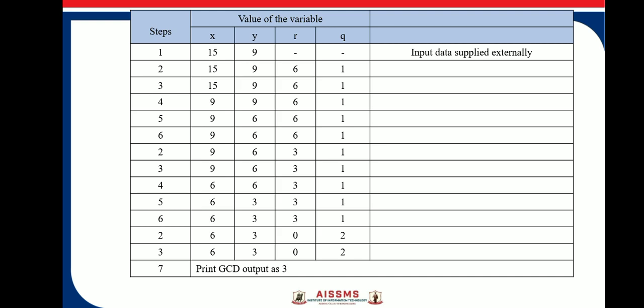If it is 0, go to step 7. Else, go to step 4. Now here, in step 3 again, 9, 6, 3, 1. These are the X, Y, R and Q respectively.